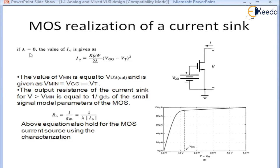The value of I0 is given by the equation when the transistor is in saturation region: I0 = (K' * W/2L) * (VGS - VT)^2. The output resistance of the current source for V greater than Vmin is equal to 1 upon gDS.